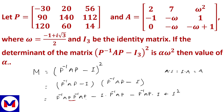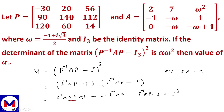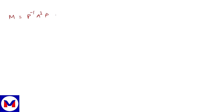Using the power of matrix: A squared gives P⁻¹A²P. So M equals P⁻¹A²P minus 2·P⁻¹AP plus I, and I squared is nothing but I.